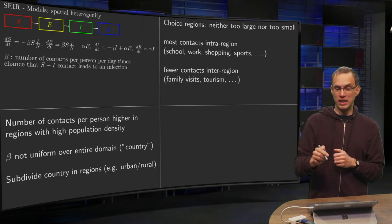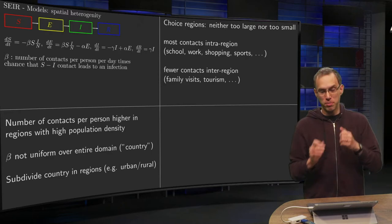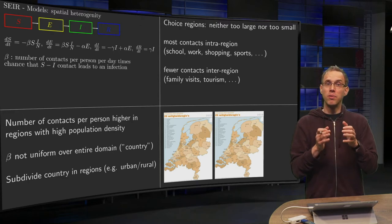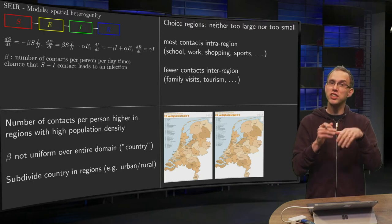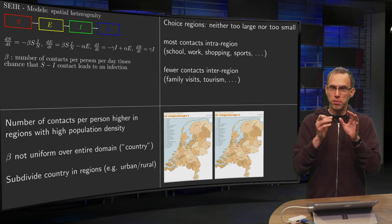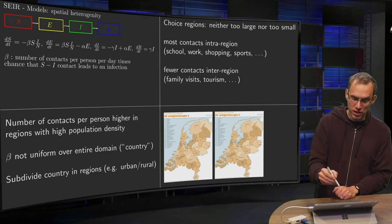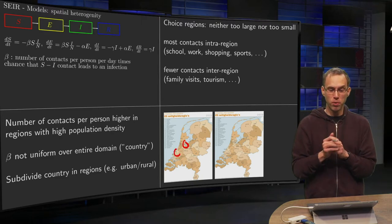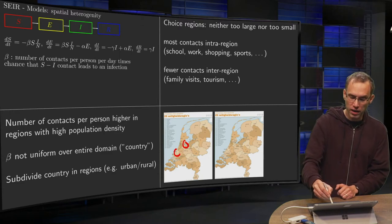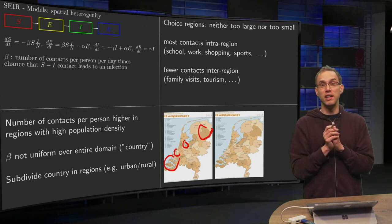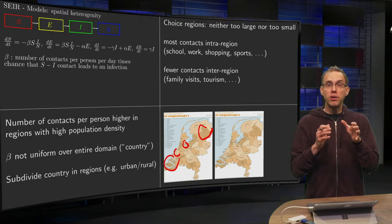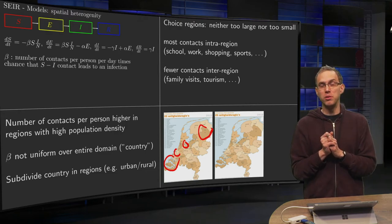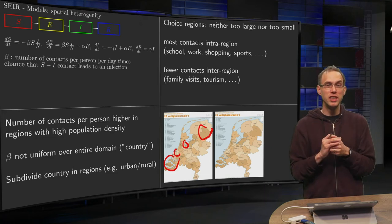How can we choose our regions? They shouldn't be too large or too small. For example, since I'm from the Netherlands, here we have a map of the Netherlands. In this map, the Netherlands is subdivided in 25 regions and all 25 have more or less the same population, a bit less than a million. We have regions with a high density, small regions with a high density here around Amsterdam or the Hague, so the big cities. Those regions are very small. And we have larger regions like here in Drenthe or in Zeeland. The population density is much smaller.